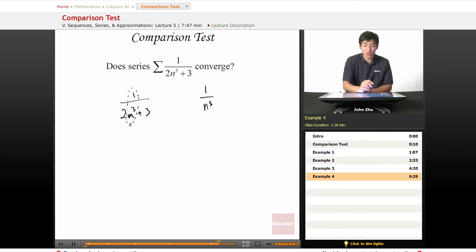We know that 2n cubed plus 3 will always be greater than n cubed. So that means the term itself will be less than.